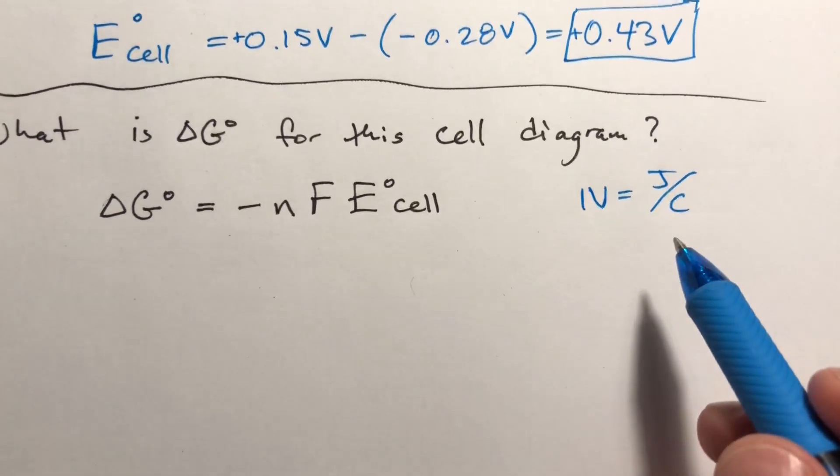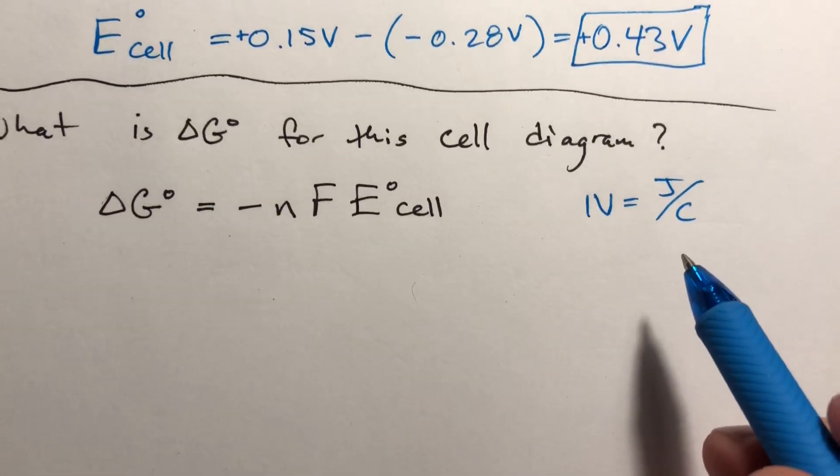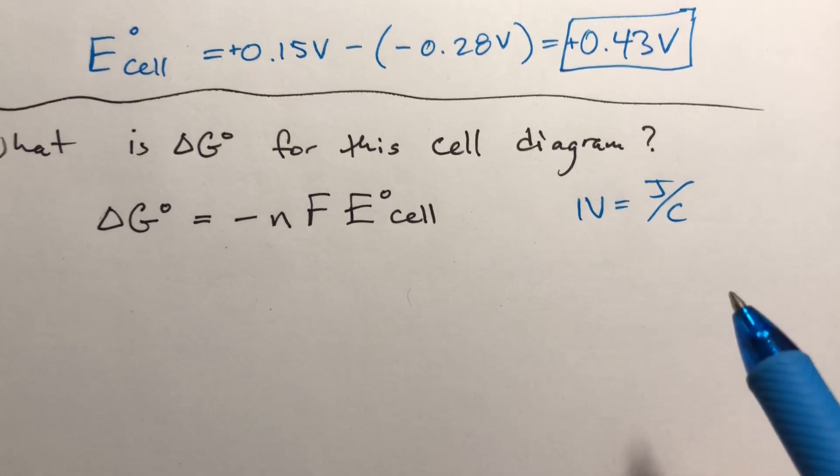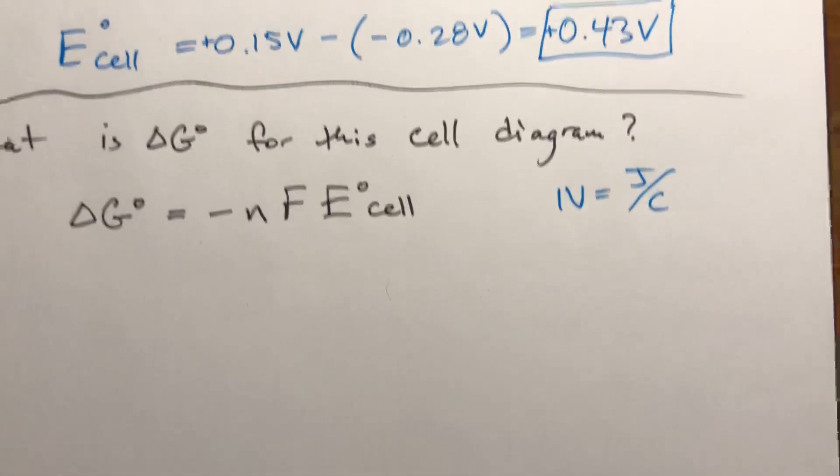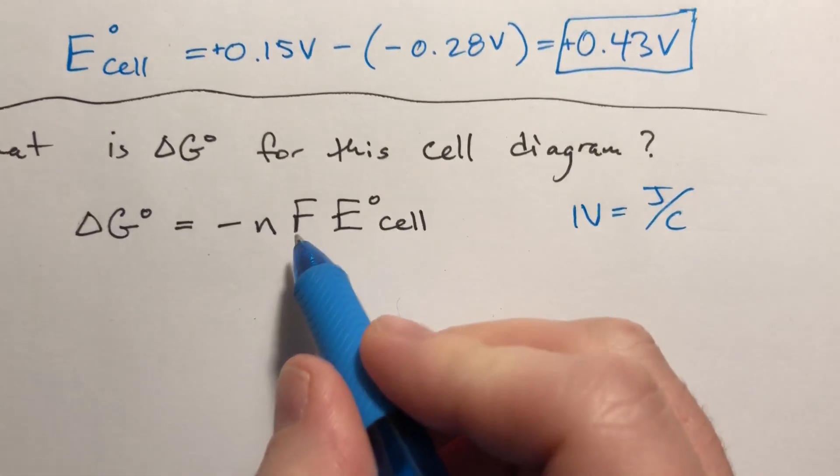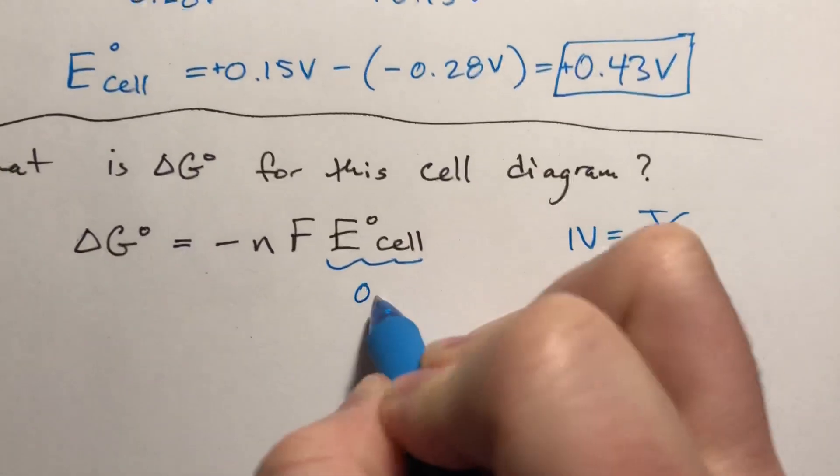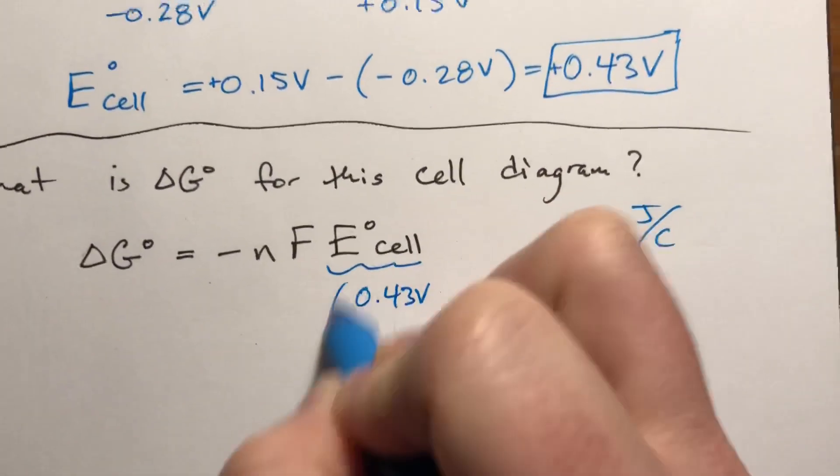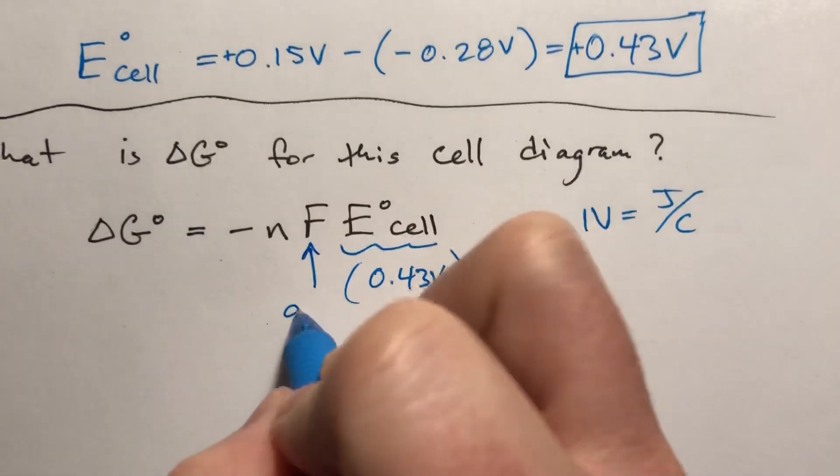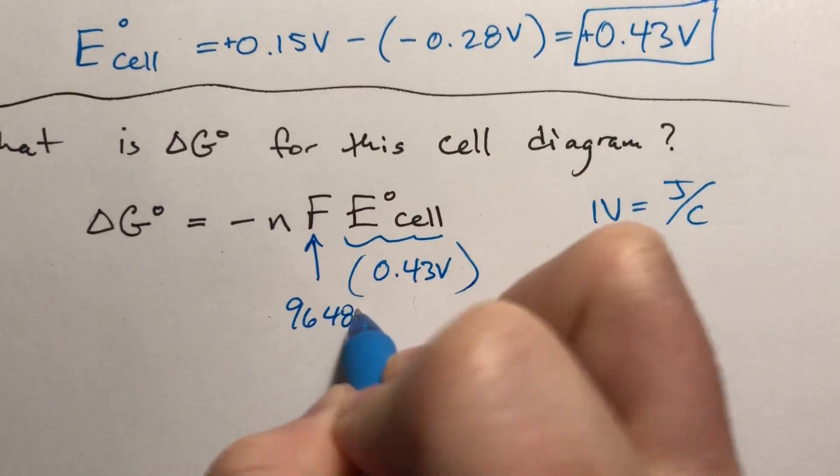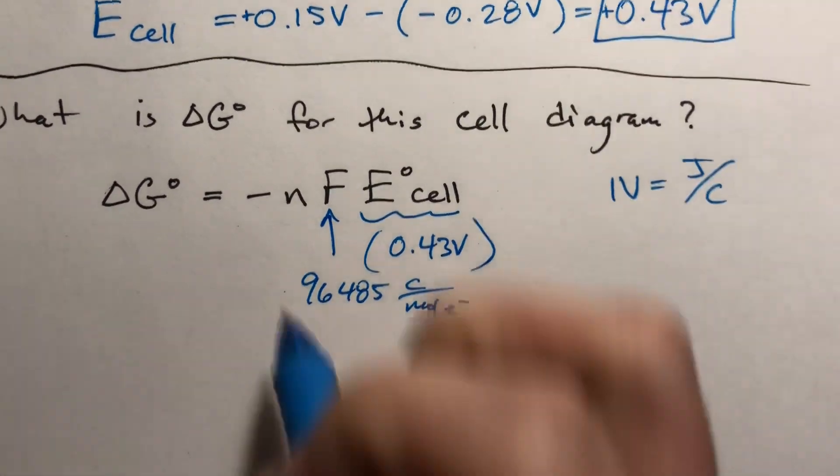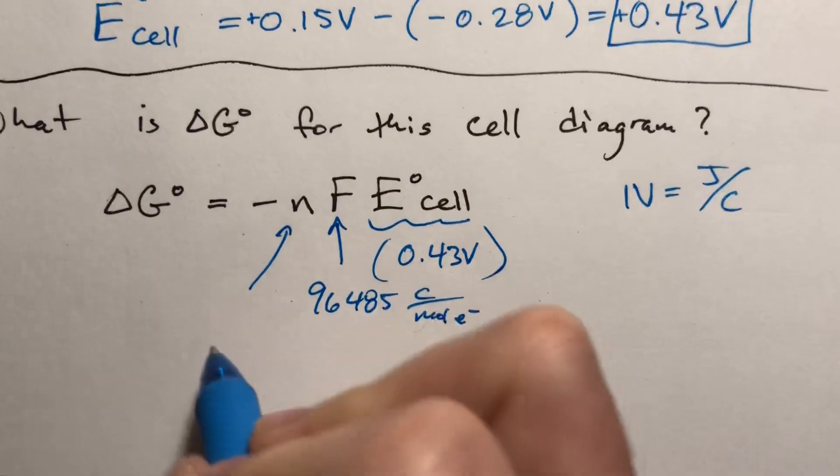Coulombs are a complicated unit that has to do with electrical potential, has to do with the energy of an electron traveling. Honestly, all that really matters is that F is Faraday's constant, so I'm just going to go ahead and write the values in here. This is 0.43. This is Faraday's constant, which is 96,485 coulombs per mole of electron, and n is the number of electrons.